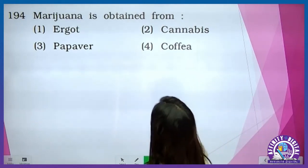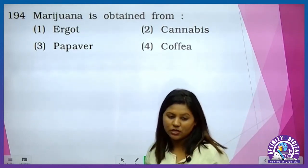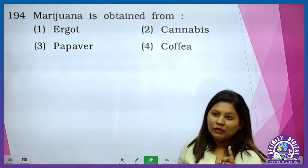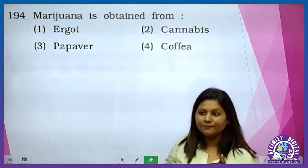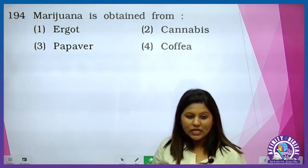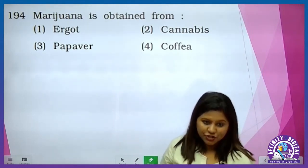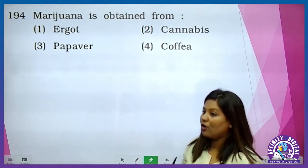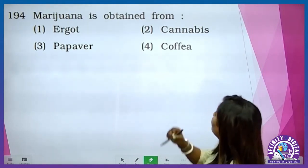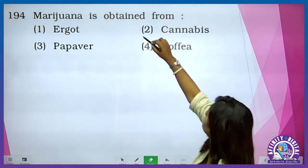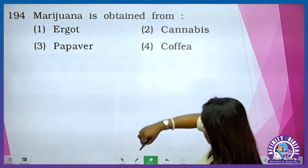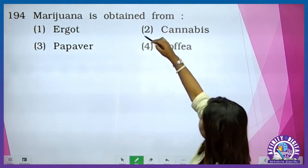Marijuana is obtained from Cannabis sativa. Marijuana, charas, ganja, bhashish — they are all derived from Cannabis sativa. This is the correct option.